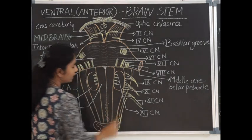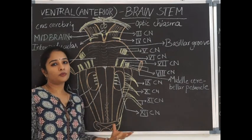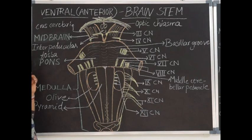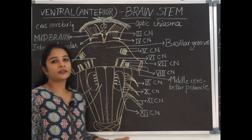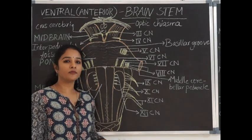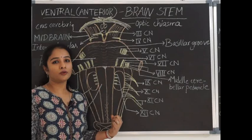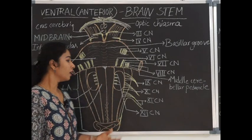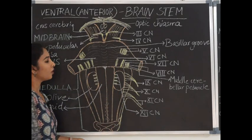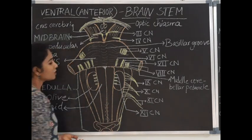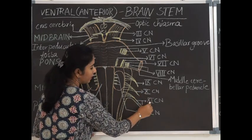The lateral-most elevation is the inferior cerebellar peduncle, which connects the medulla oblongata to the cerebellum. Medulla consists of vital centres like respiratory centre, cardiac centre and vascular centre. Any injury or compression of medulla oblongata is often fatal. The last four cranial nerves get their origin from the medulla — the 9th, 10th, 11th and 12th.